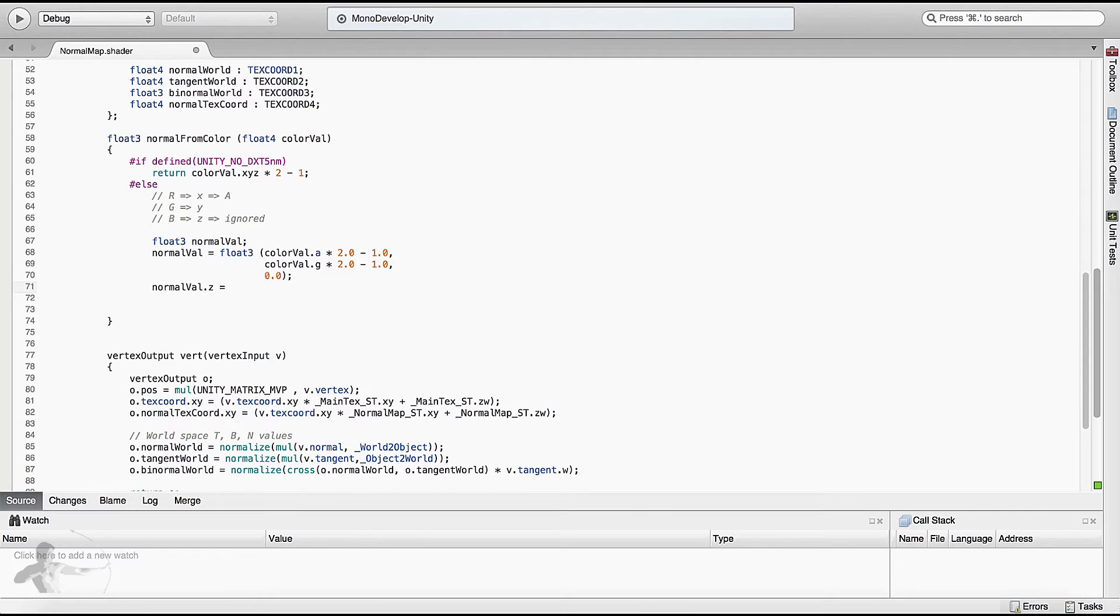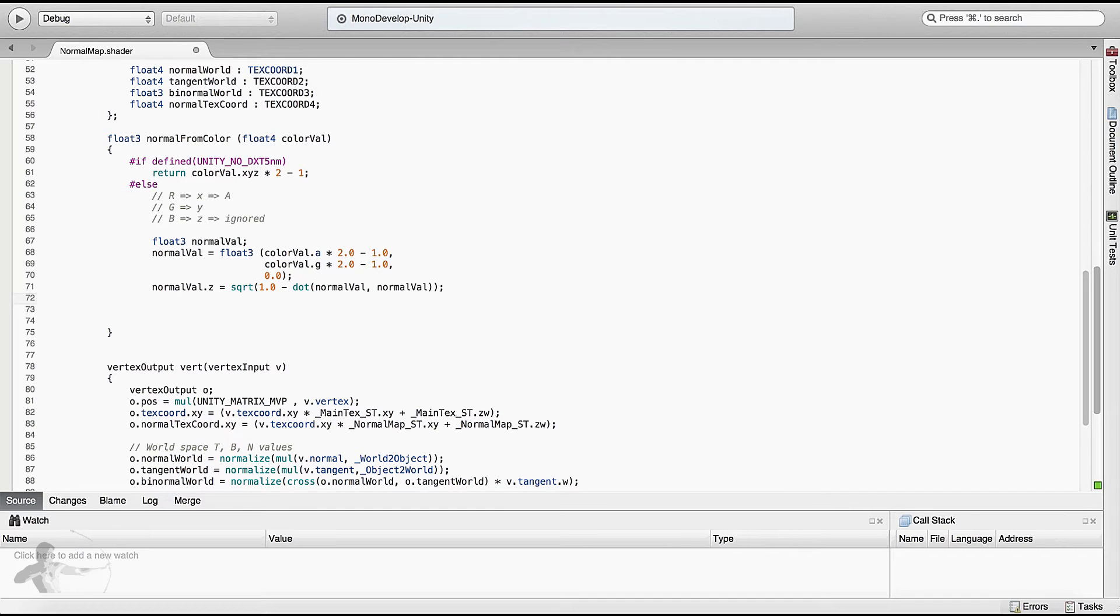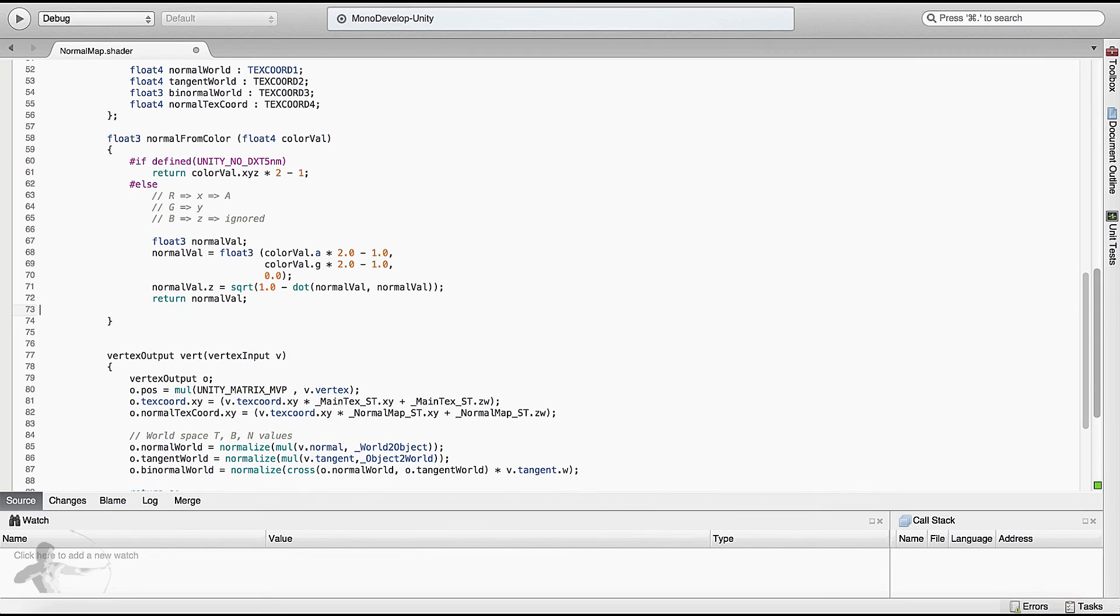Our equation became sqrt(1 - dot product of the vector formed by xy, which is normalWell). This will give us z, and we've packed it inside the normal value. We can use normalWell in place of vector xy because z here is already zero. That's why we take the dot product of normalWell with normalWell and return normalWell. Let's save our shader and see if we get any compiler errors.